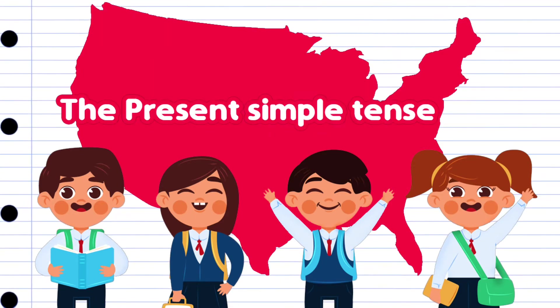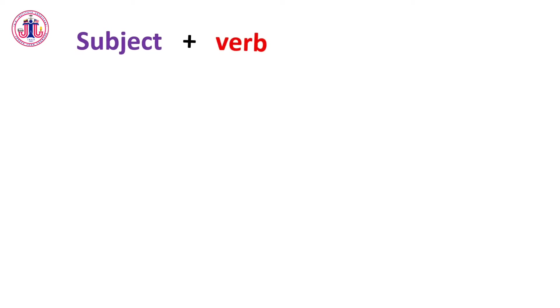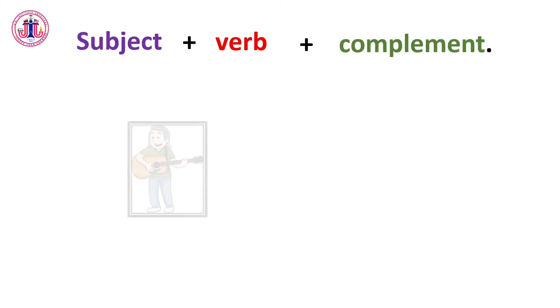The present simple tense. When making sentences in the present simple tense, we use the subject — which is the person, the object, or the animal — the verb, which is the action, and the complement.